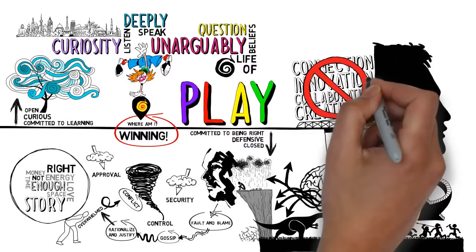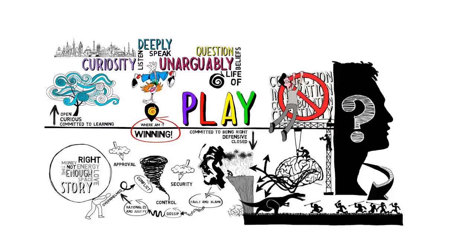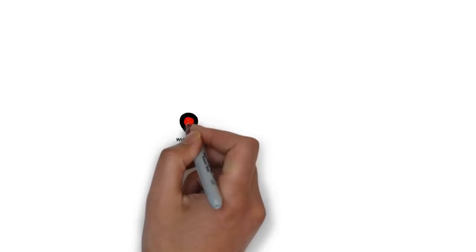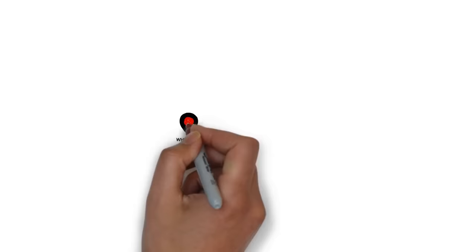Leaders today can't thrive if they're in survival mode. So the first activity of conscious leadership is location, location, location. In this now moment, where am I? Telling ourselves and others the truth about our current location begins the great conversation.